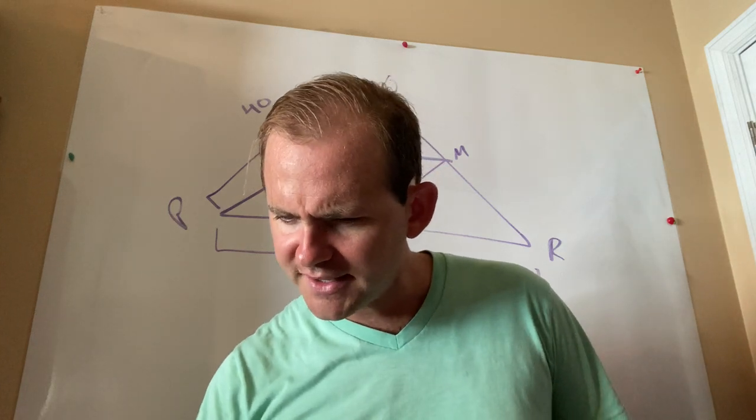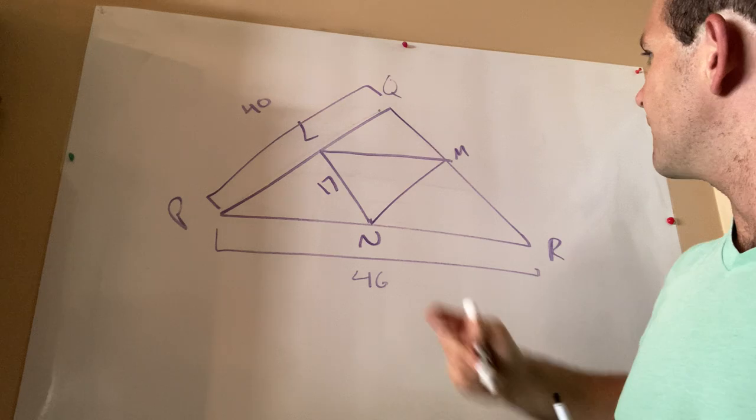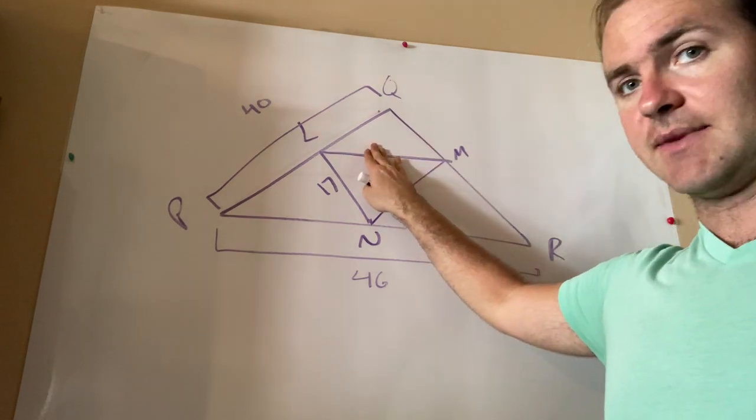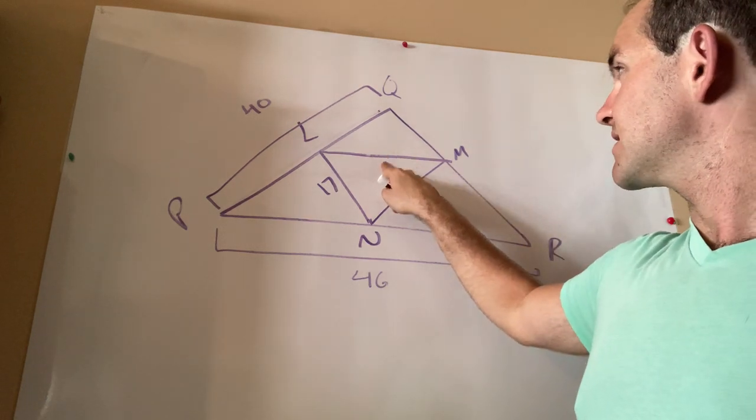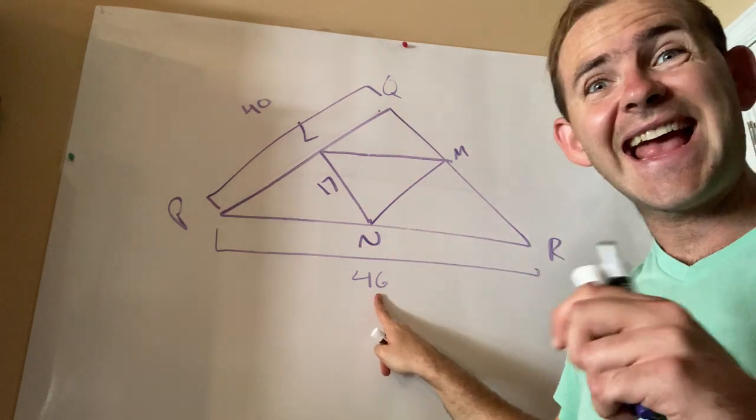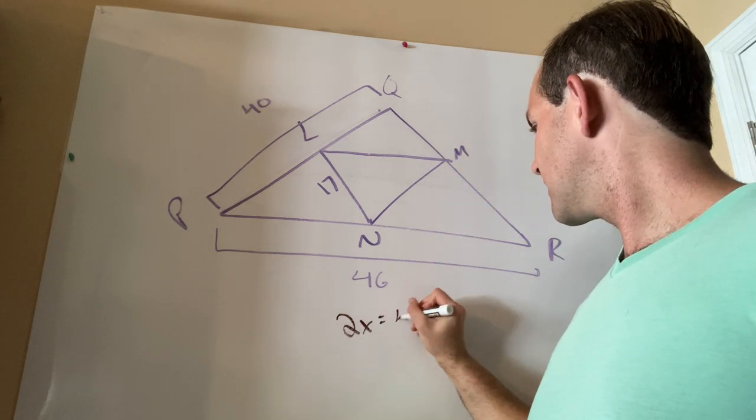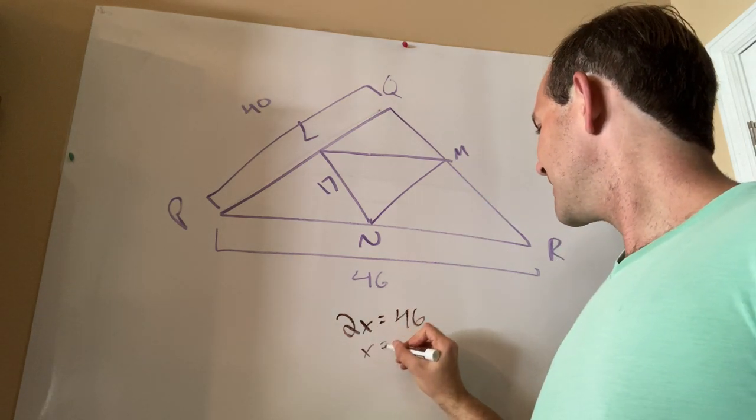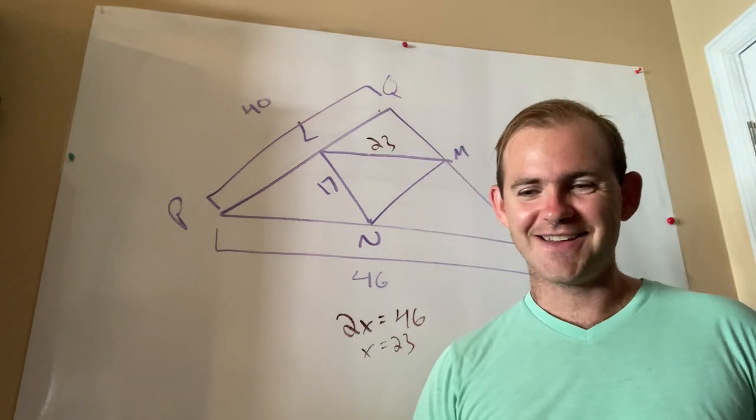All right, let's start filling some stuff in, guys. The first thing they ask us to do is find LM, which is right here. Now LM is a mid-segment. It's a mid-segment for this side. How many of these mid-segments does it take to make this side? It takes 2. So I could say 2 times some unknown equals 46, and that means that that mid-segment is 23.